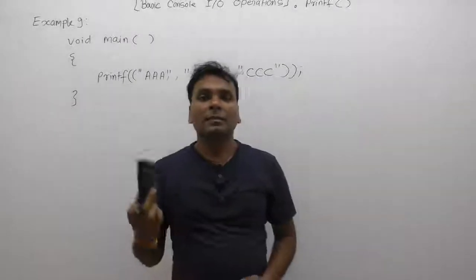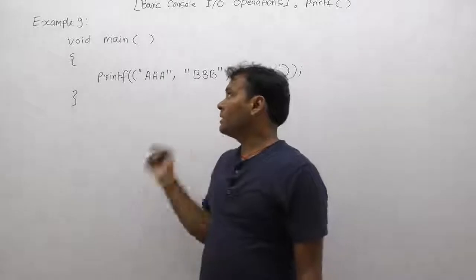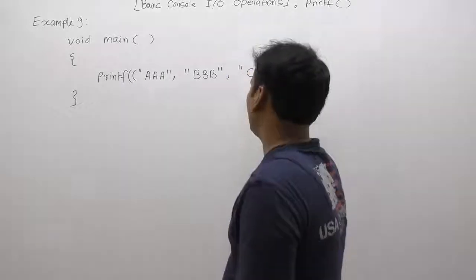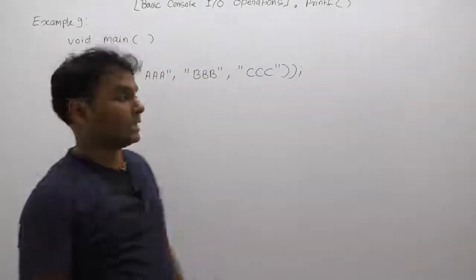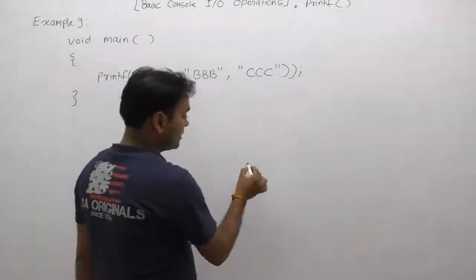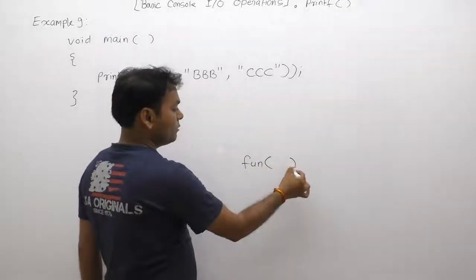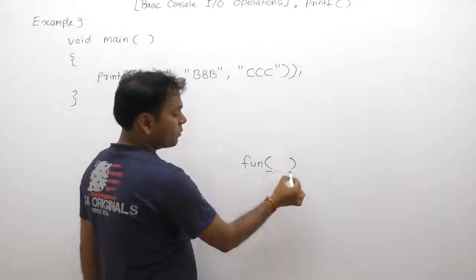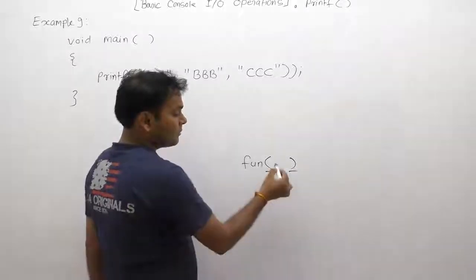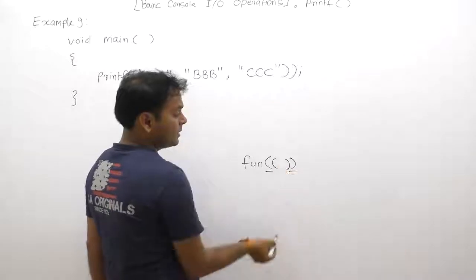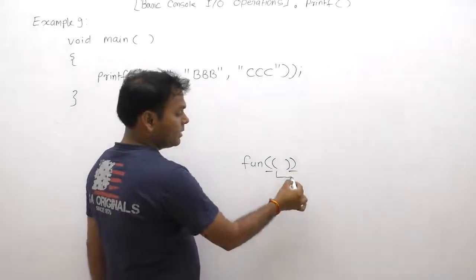Now consider this example. This is different from previous examples because here we are supplying two times parentheses. One time, as we know, is the basic syntax of any function - a function name along with opening and closing parentheses. This is part of syntax. When we are supplying inside that another parenthesis, then it becomes part of operator.